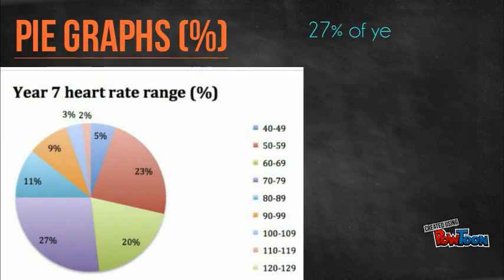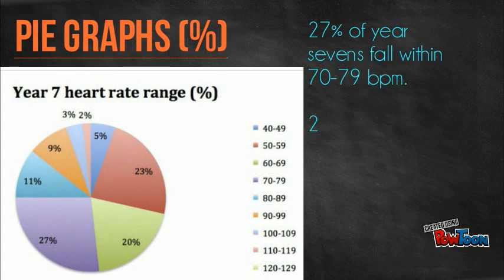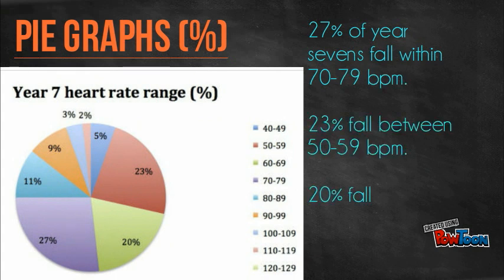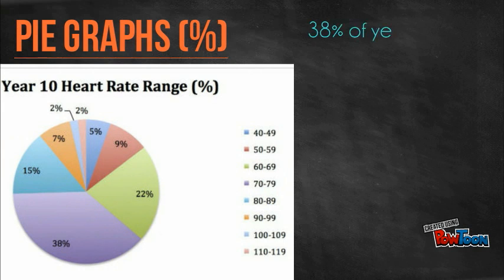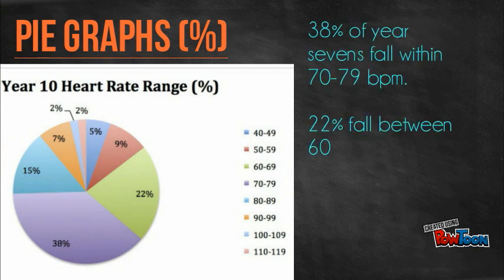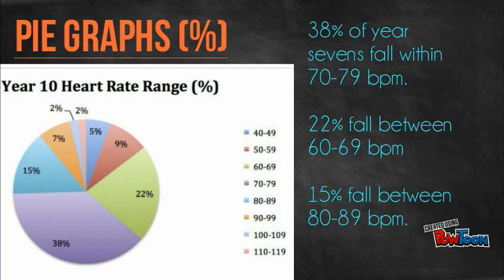Pie graphs show us where the highest percentage of students' resting heart rates fall. Comparing the two graphs, we can see that 75% of Year 10s fall between 60 to 89 beats per minute, while only 58% of Year 7s fall in the same measurement. Year 7s have 23% in the 50 to 59 range.